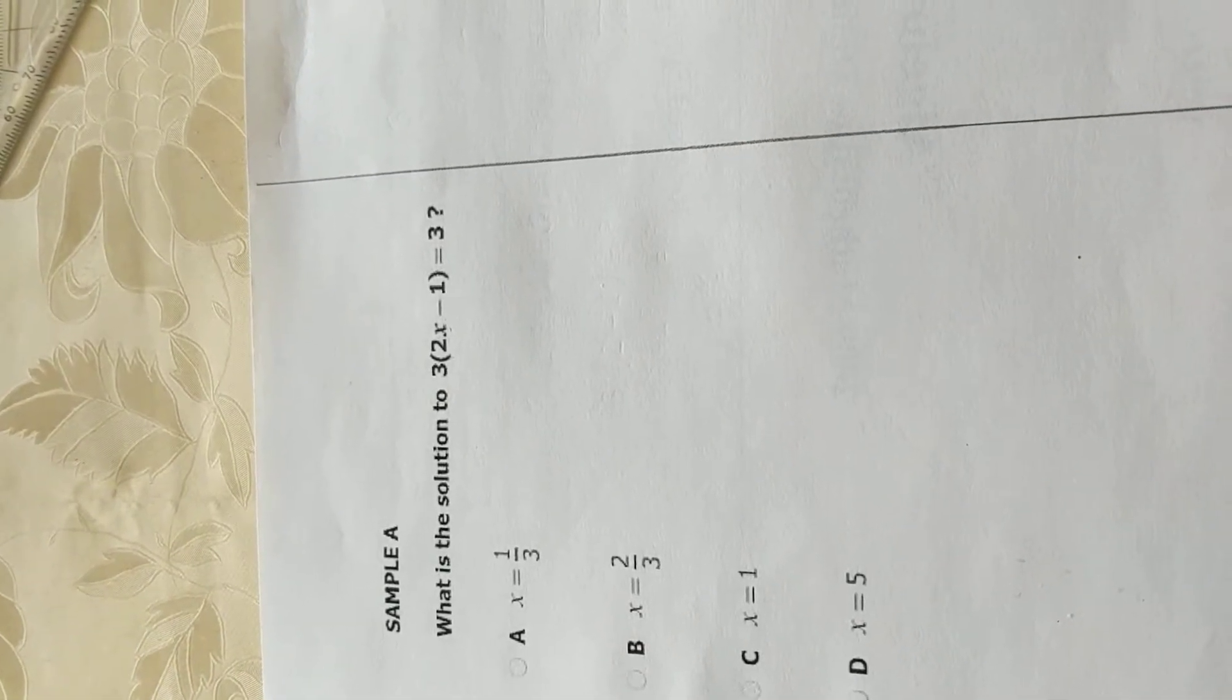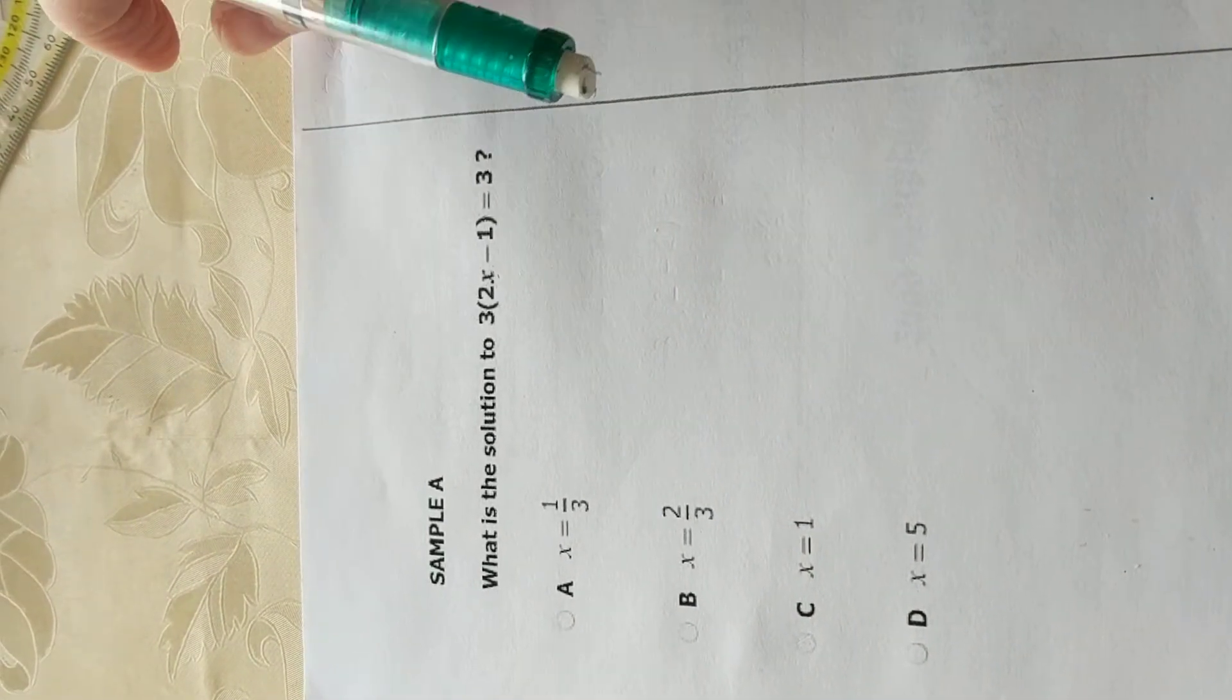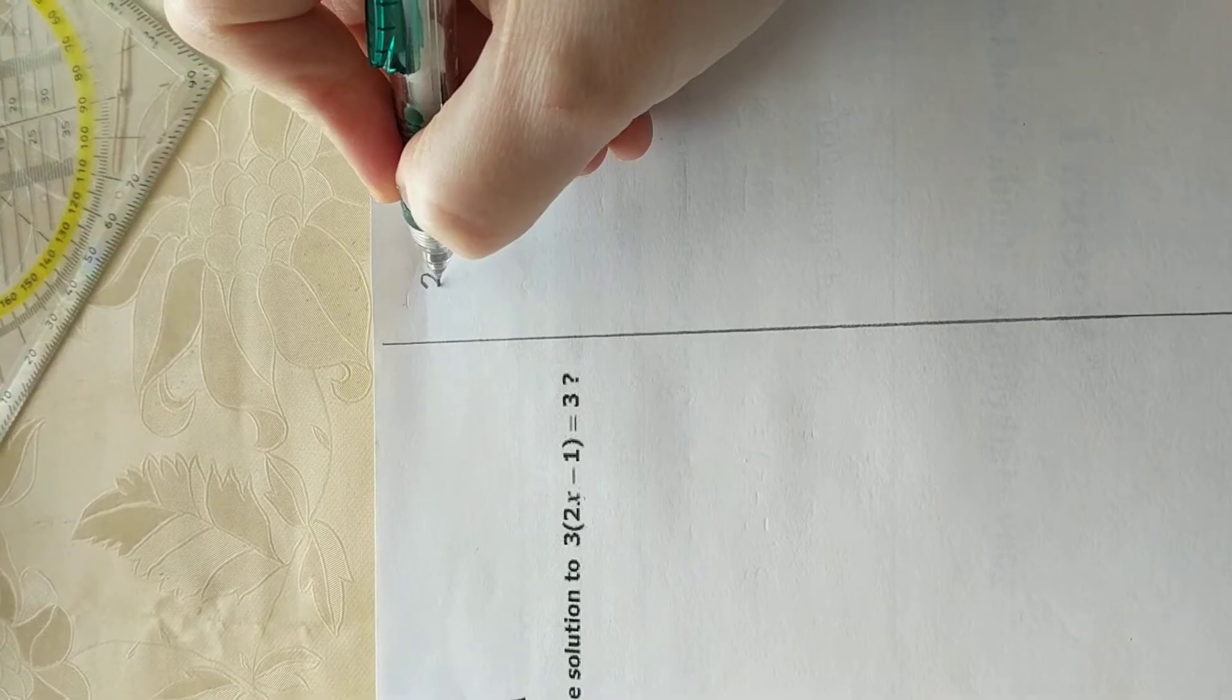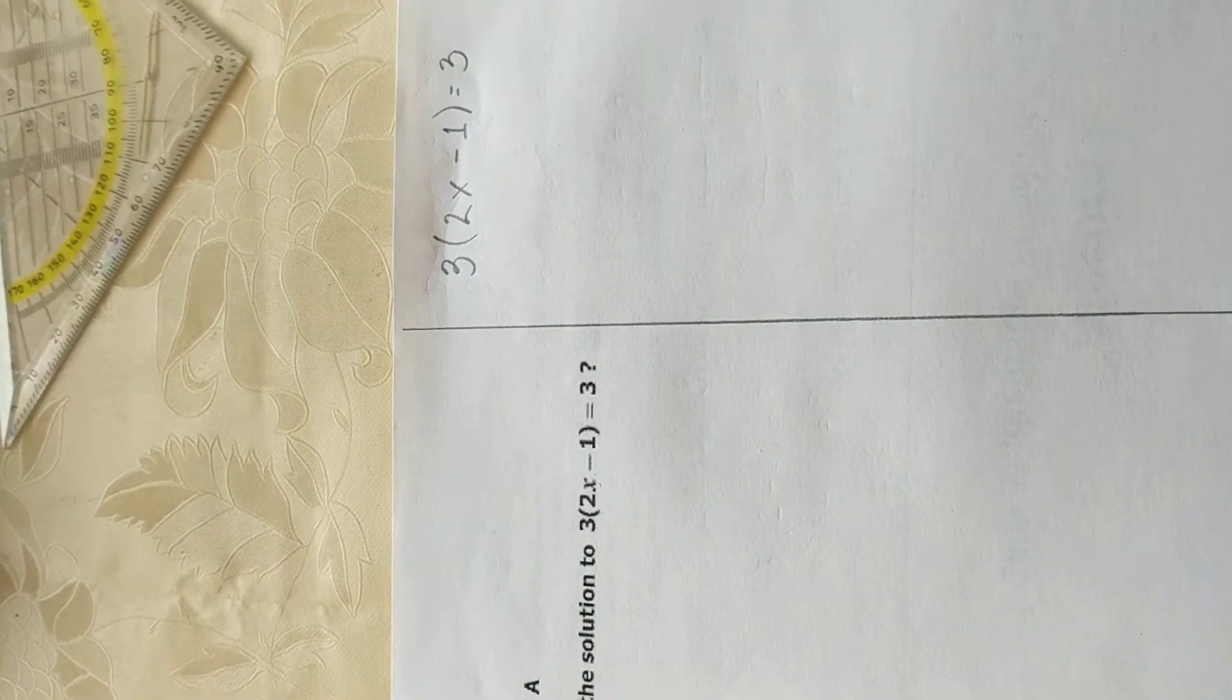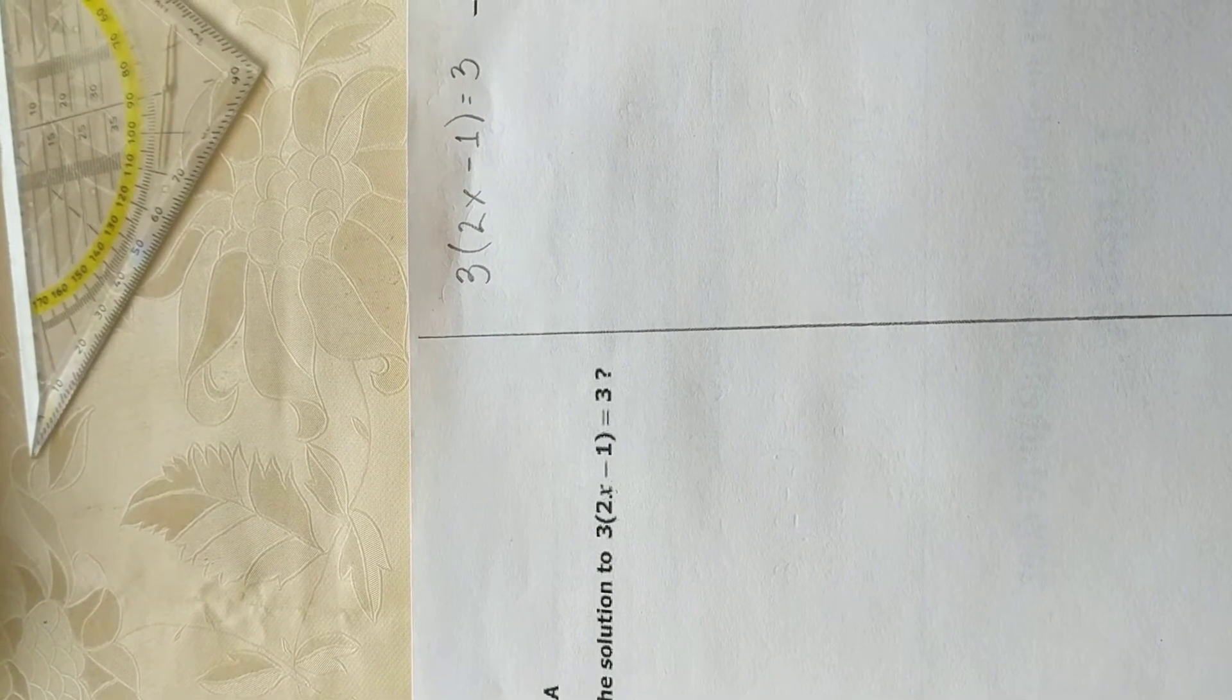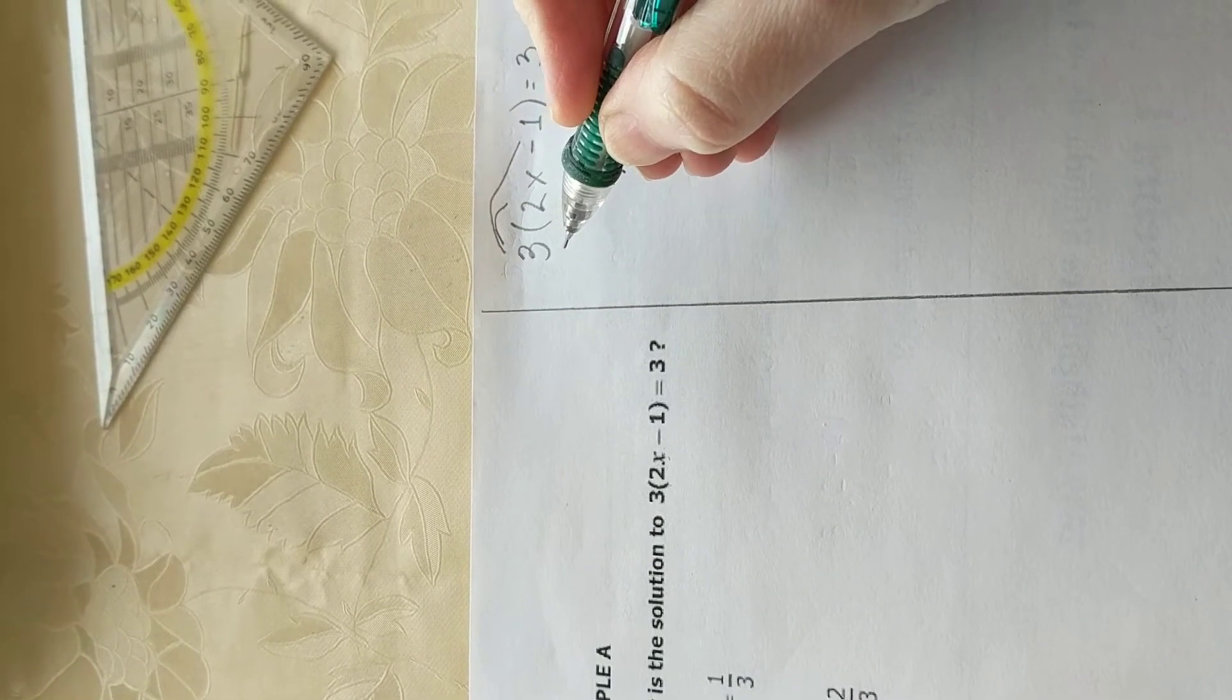Having looked at that, let's go back to our example. Three times open parenthesis 2x minus 1 close parenthesis is equal to 3. The problem is a little extended because we have two sides, but that should not change our distributive property. So let's copy the problem on this side, and then I will go through this step by step.